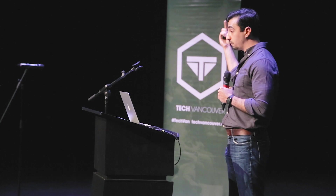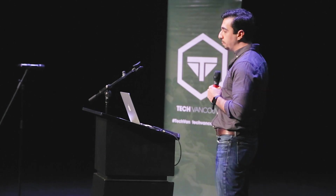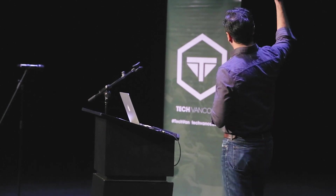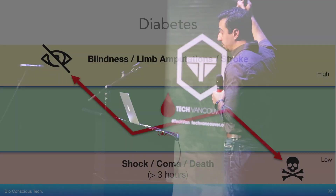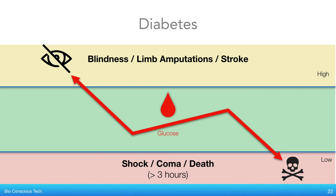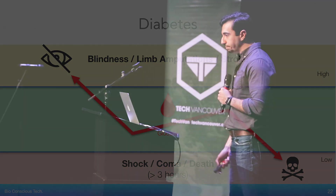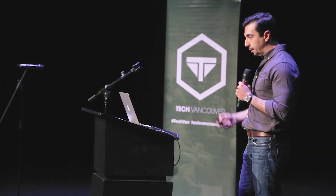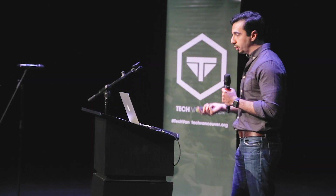But for a patient with diabetes, because they've lost that innate capability, if glucose goes too high and stays there for a long period of time, there's blindness, limb amputation, strokes. If it goes too low, you essentially expire in a matter of three to seven hours. So at any moment in time, a diabetic is about three to seven hours away from death. The problem seems to be glucose management.